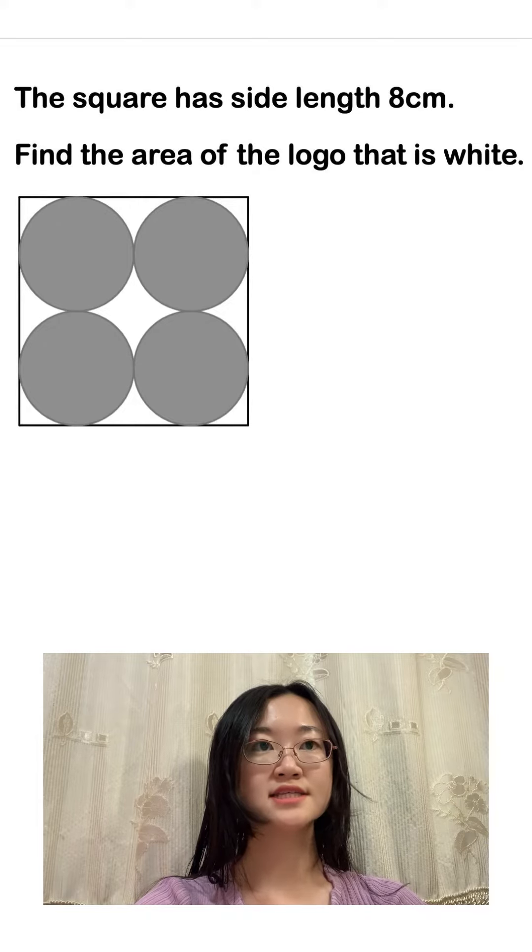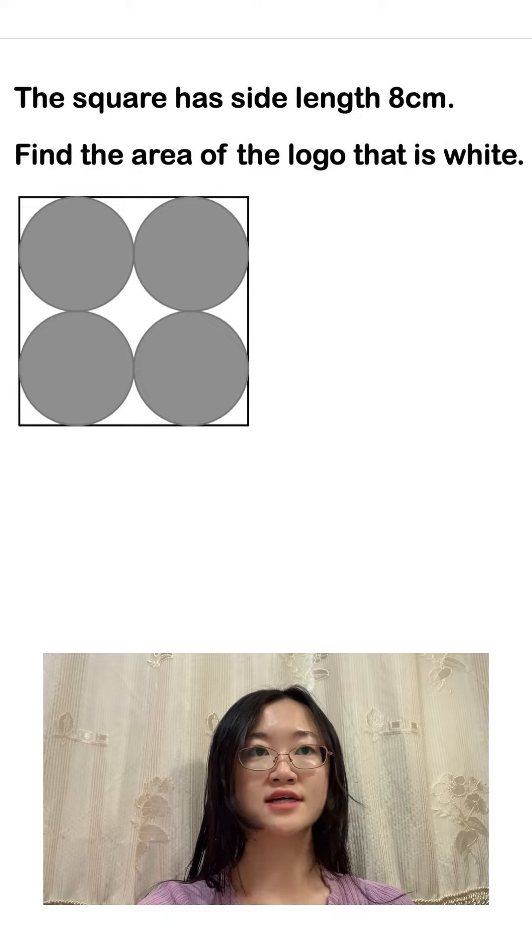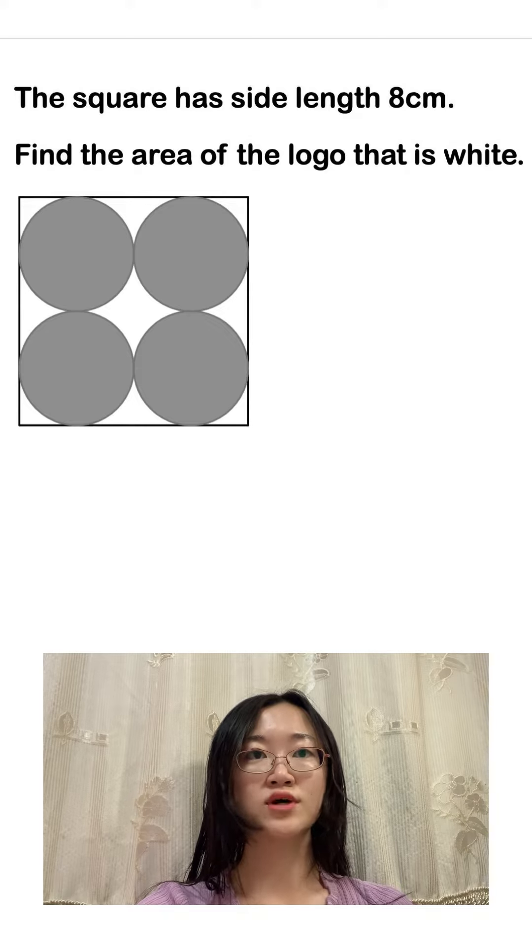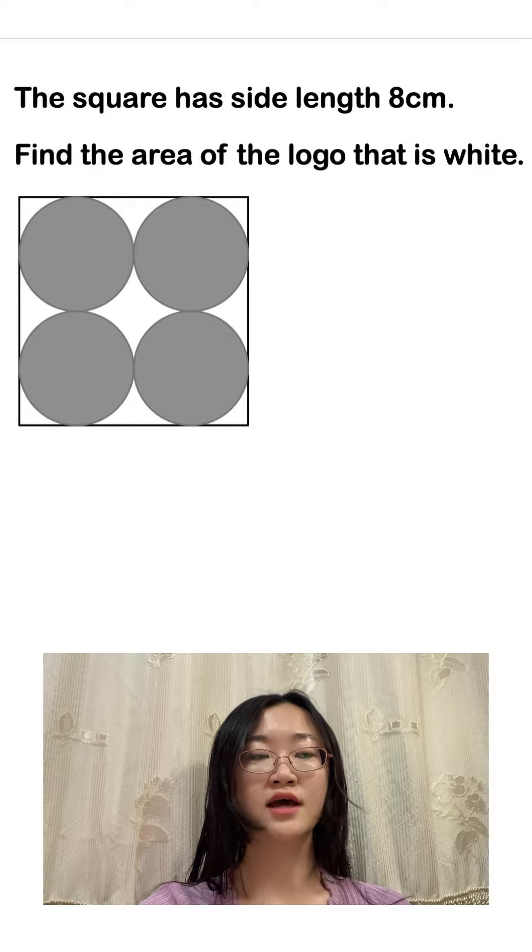Hi guys, please don't miss questions like this in exams because they are not as hard as they look. In this question we have a square which has a side length of eight centimeters and we need to find the total white area.